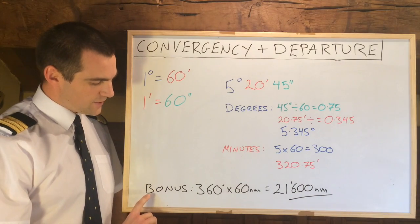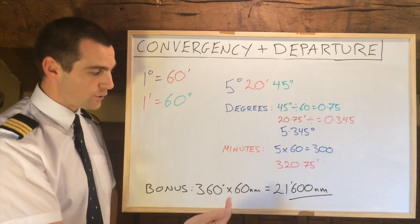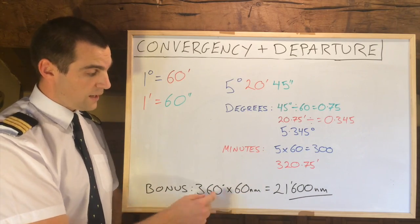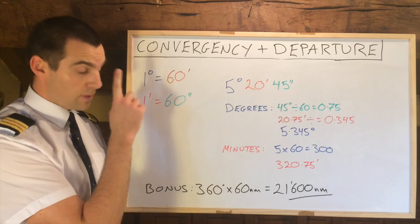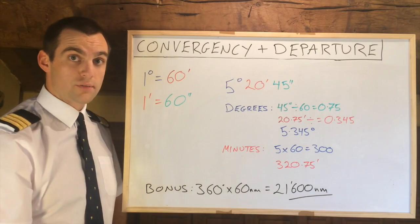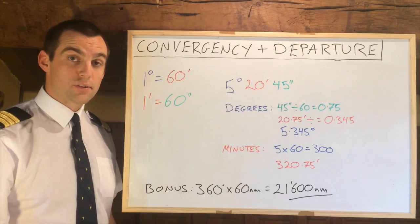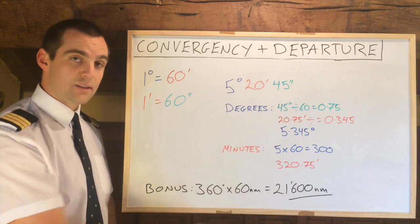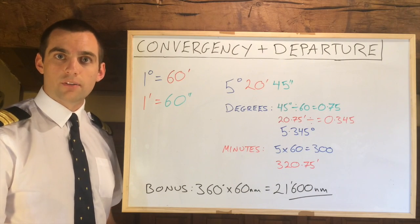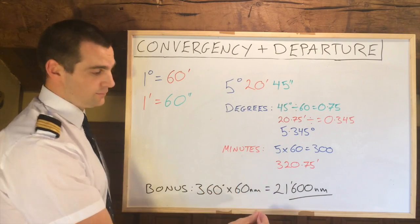Bonus: 360 degrees (a full circle) times 60 nautical miles per degree equals the circumference of the earth in nautical miles. So if you're ever in doubt, 360 × 60 gives you the earth's circumference in nautical miles. Multiply by 1.852 if you want it in kilometres.